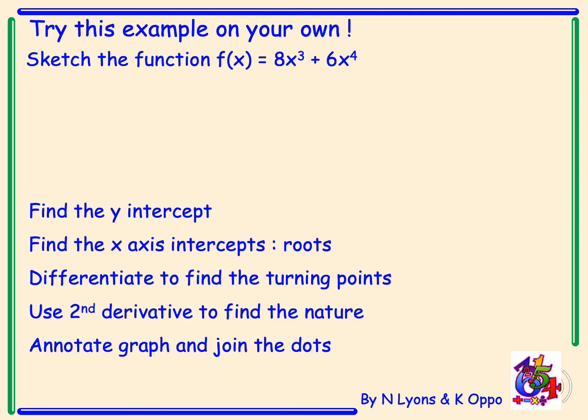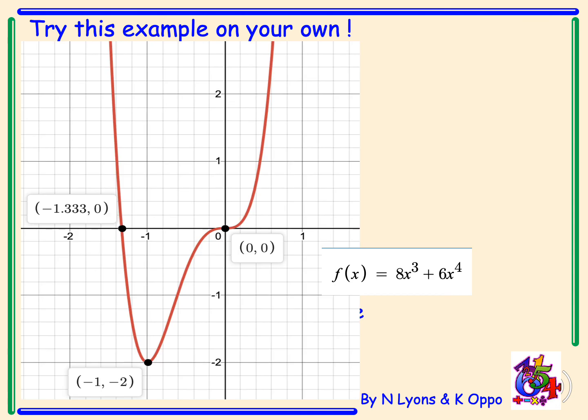Now try this example on your own. There are some key success criteria listed to help you. Please pause the video. Here is the solution: the graph of 6x⁴ + 8x³ has a y-intercept at 0, roots when x = 0 and x = -4/3, a minimum turning point at (-1, -2), and a rising point of inflection at (0, 0). See your class teacher if you have any questions.